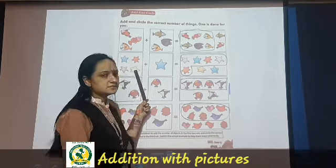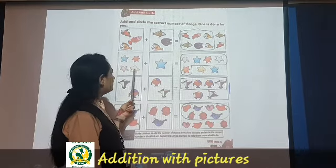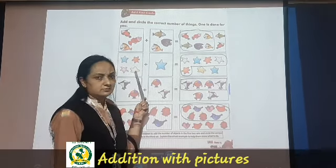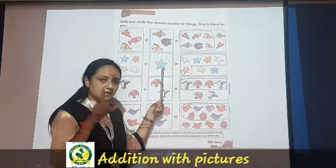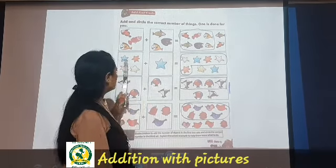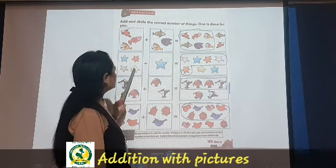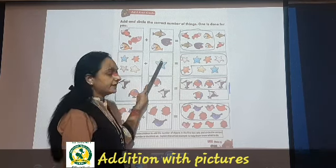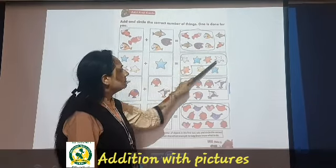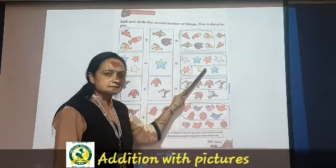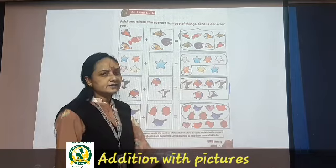Now see here. How many stars are there in the first set? 1, 2, 3, 4 — 4 stars are there. Now in the next set there will be 1. Let us count all together: 1, 2, 3, 4 and 5. So here we have 5 stars — go circle: 1, 2, 3, 4 and 5.